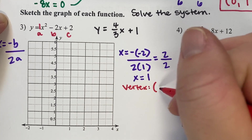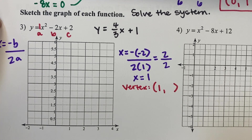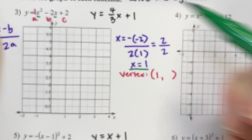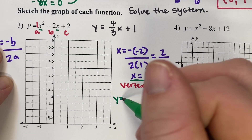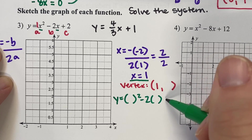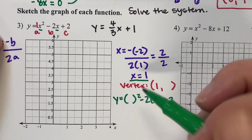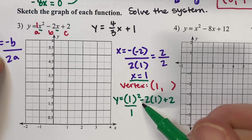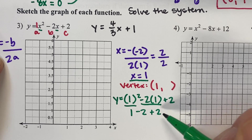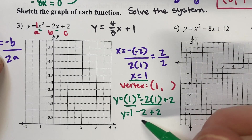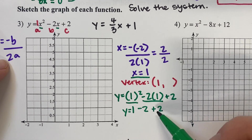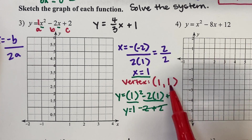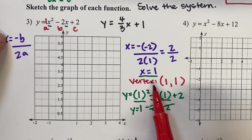We still need the y part of the vertex, so we plug x equals 1 into the original quadratic: y equals x squared minus 2 times x plus 2. Substituting: 1 squared is 1, negative 2 times 1 is negative 2, plus 2. Negative 2 plus 2 turns into 0, so y equals 1. Our vertex is 1, 1.